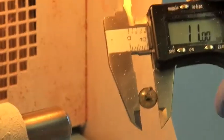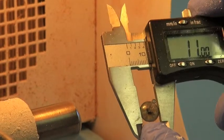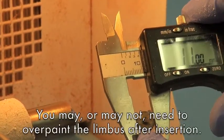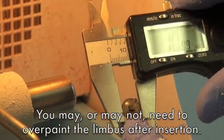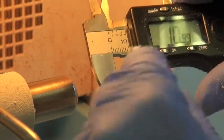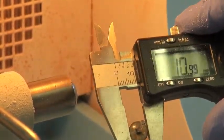Let's measure and see where we're at. That is an exact 11.0 diameter. And you can still see just a little bit of a limbus on here, which might be perfect in this case. Sometimes you may need to paint that on afterwards if you have a thick limbus or something like that.